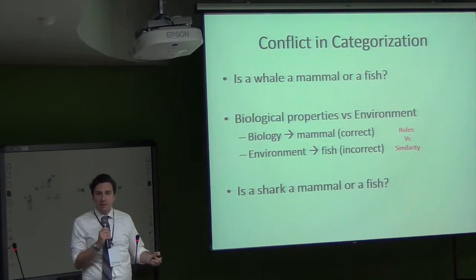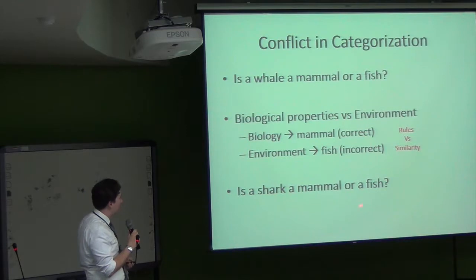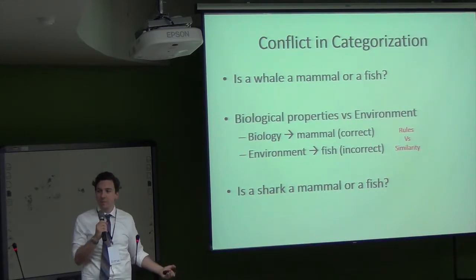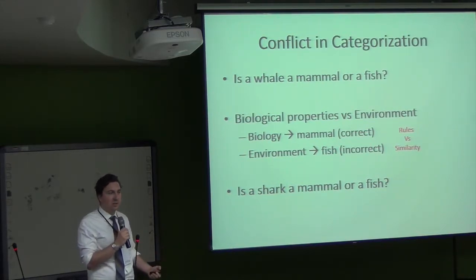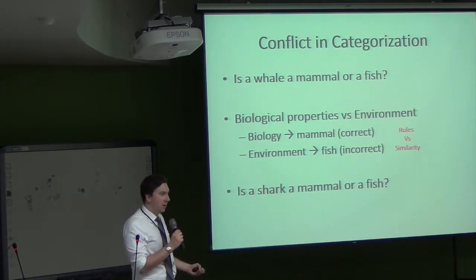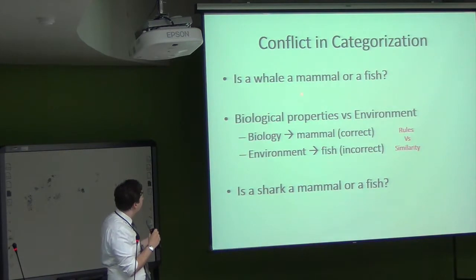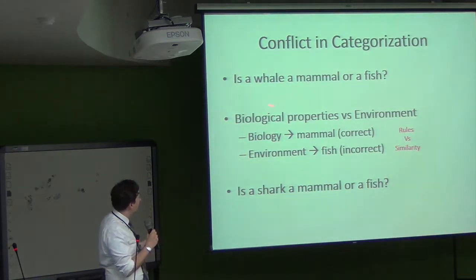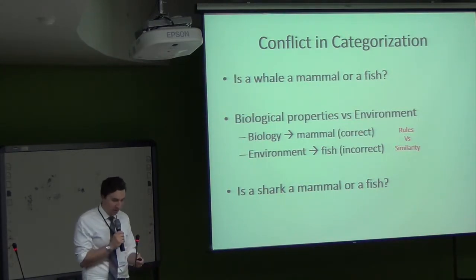It's easy to see these types of questions if you consider another example where the properties are congruent — pointing in the same direction. Is a shark a mammal or a fish? Here both the biological properties and the similarity to other things in its environment point to the correct answer. So in one case you have incongruent or conflicting information, which makes the question hard, and in the other you have congruent information, which makes it easier.